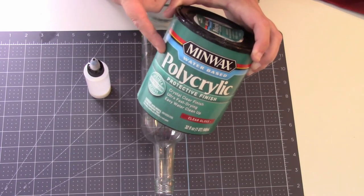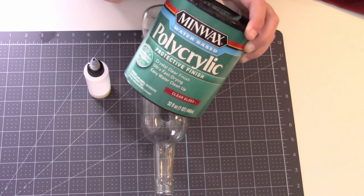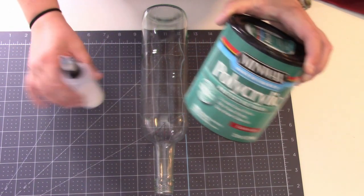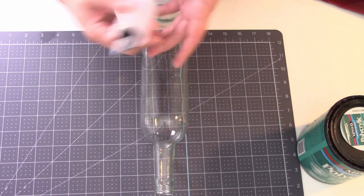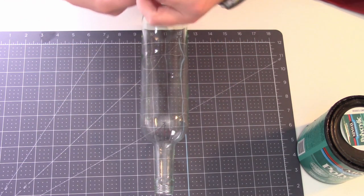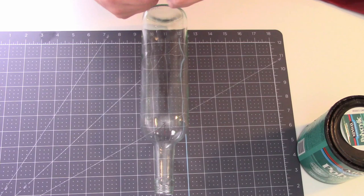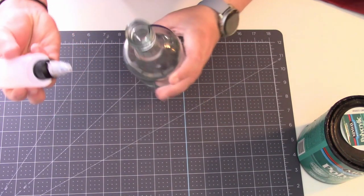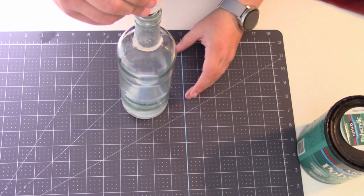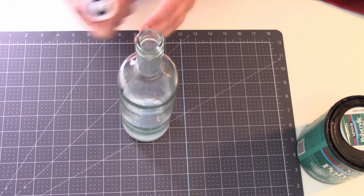First thing we're going to do is take some polycrylic which is from Minwax. This is the gloss kind but to do this project you can use any kind. I've put some in a squeeze bottle from the Dollar Tree. I just find it a lot cleaner to put your product into your bottle with a little squeeze bottle. So all we're going to do is just squeeze a pretty generous amount into our wine bottle.